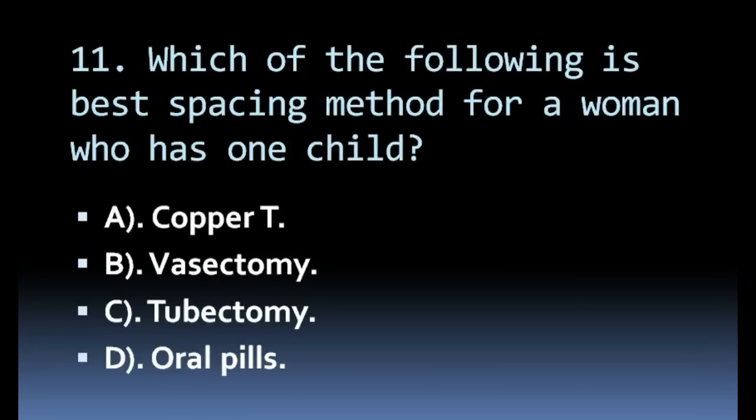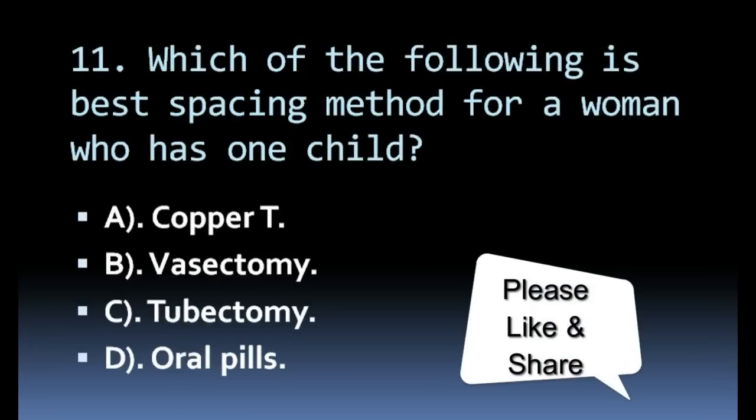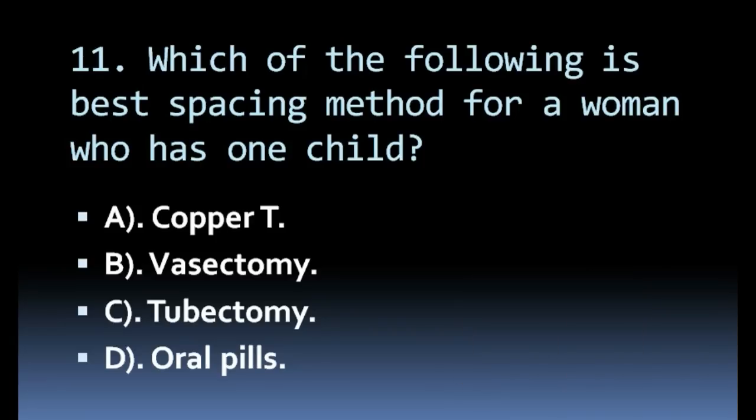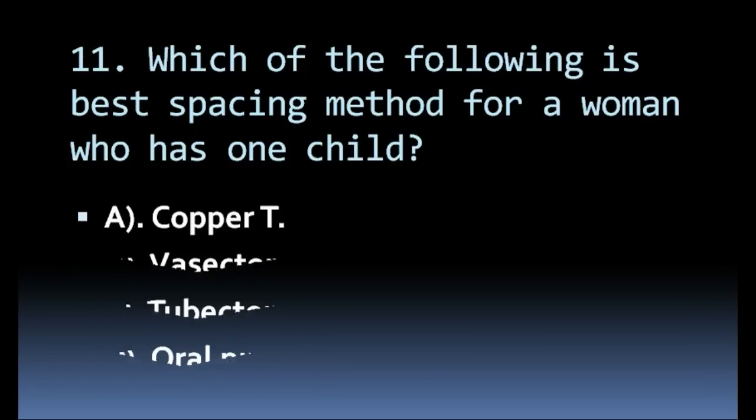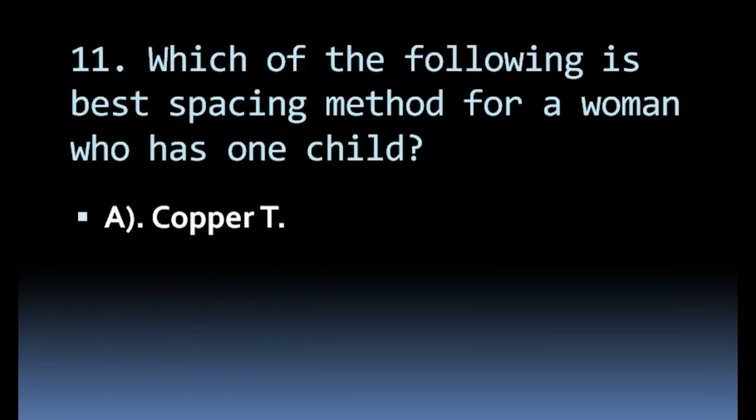Which of the following is the best spacing method for a woman who has one child? Options: copper T, vasectomy, tubectomy, oral pills. Correct answer: copper T.